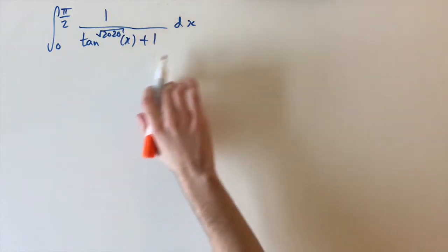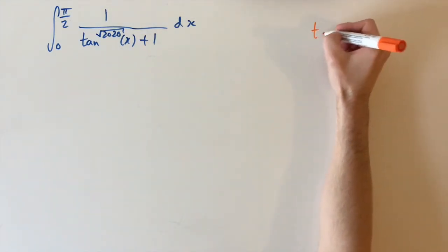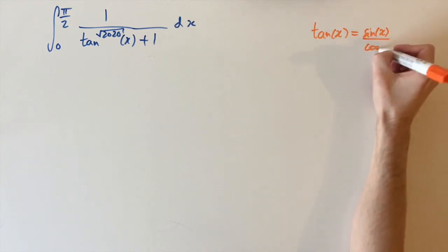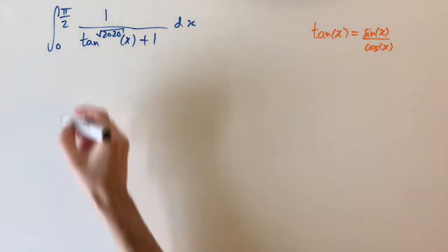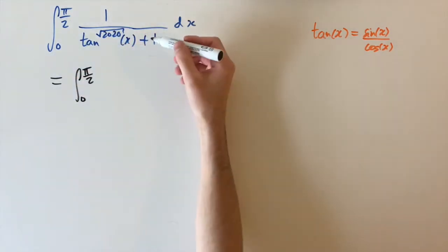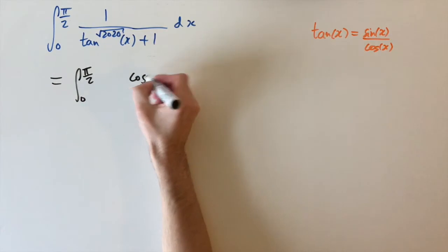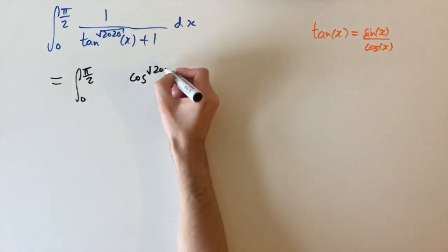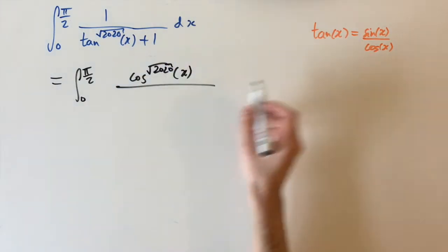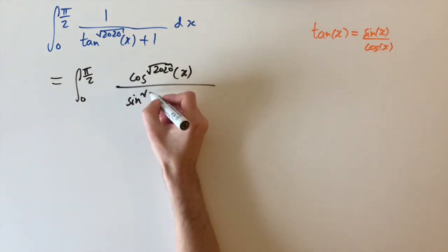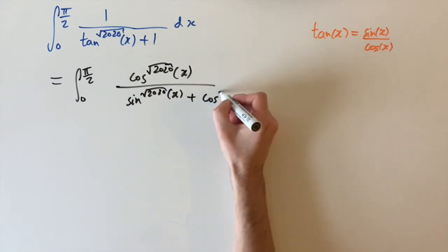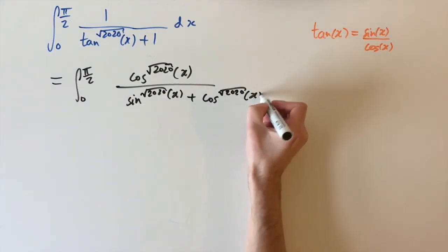The first step: recall that the definition of tan is the ratio of sine of x and cosine of x. This allows us to do some algebra. We can rewrite this integral between zero and pi over two by multiplying by cosine to the power of the square root of 2020. So then tan simplifies to just sine with the same power — square root of 2020 of x — and the one turns into another cosine factor: cosine to the power of square root of 2020 of x dx.